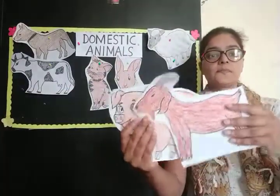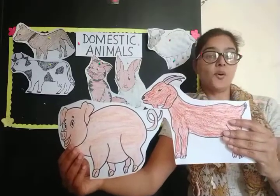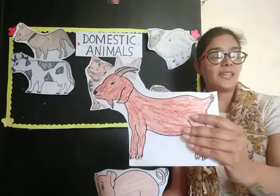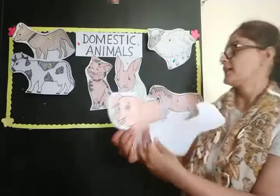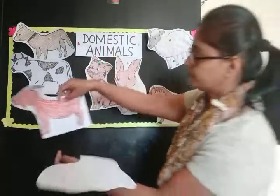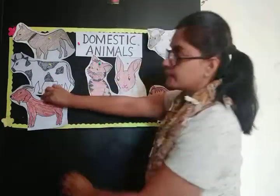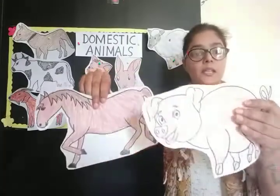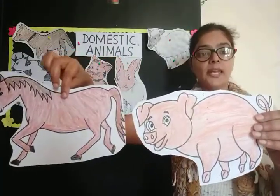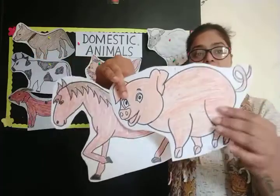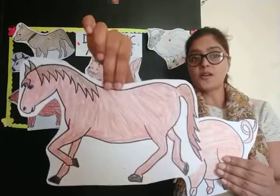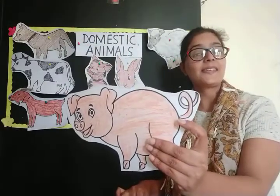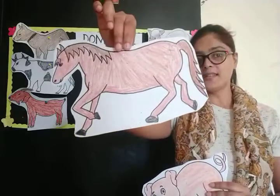Now see, children — tell me which one is the goat. Is this the goat? No. Is this the goat? Yes, it's a goat. And now tell me children, in these two pictures, which animal has a small tail? Horse has a small tail? No. And pig? Yes — pig has a small tail. Horse has a big tail.